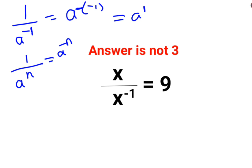So here also, whatever is the index, when you take it in the numerator it becomes positive. Or rather we take it as negative of negative 1 which becomes positive 1. So we have x multiplied by x raise to 1 equals to 9.